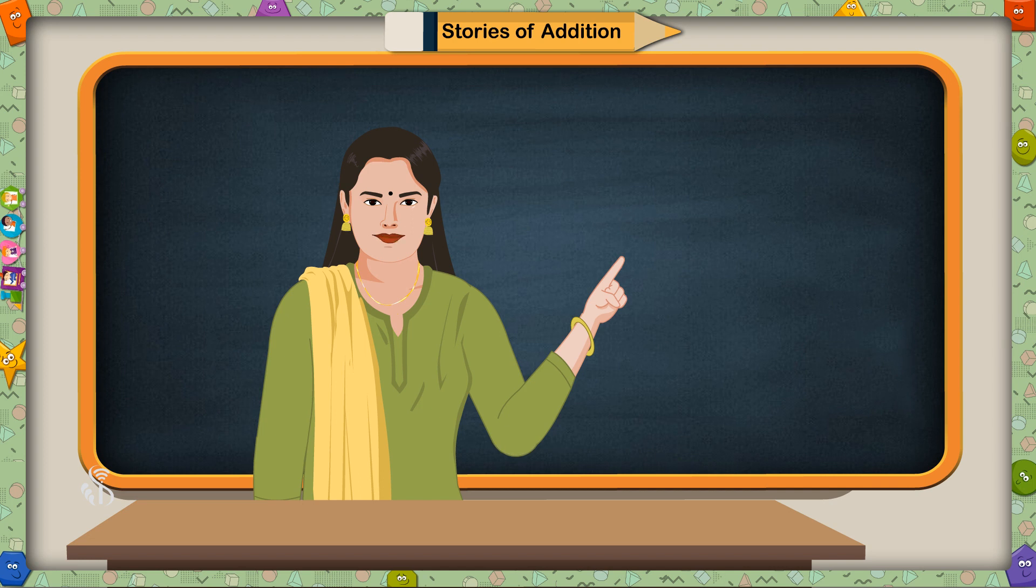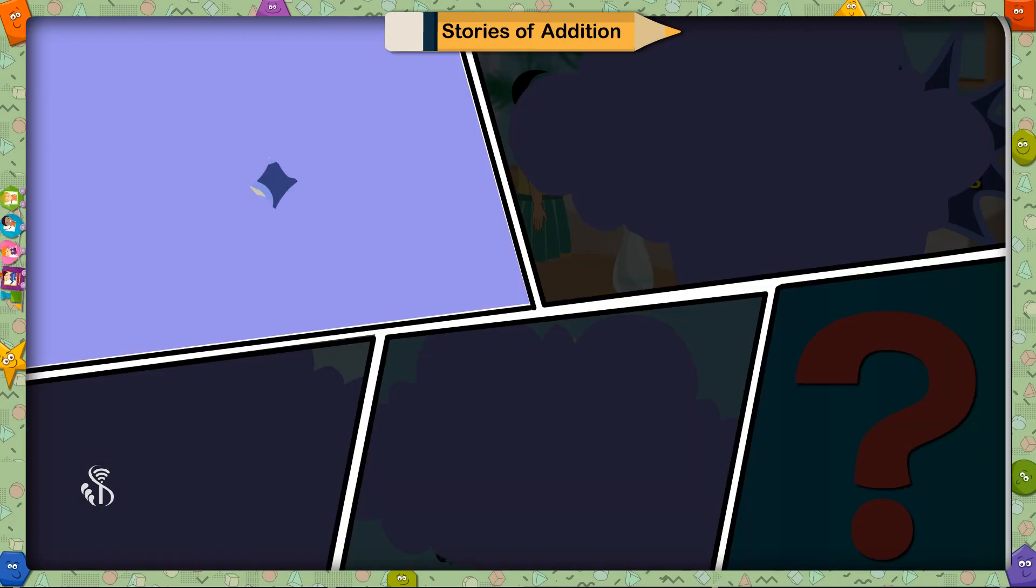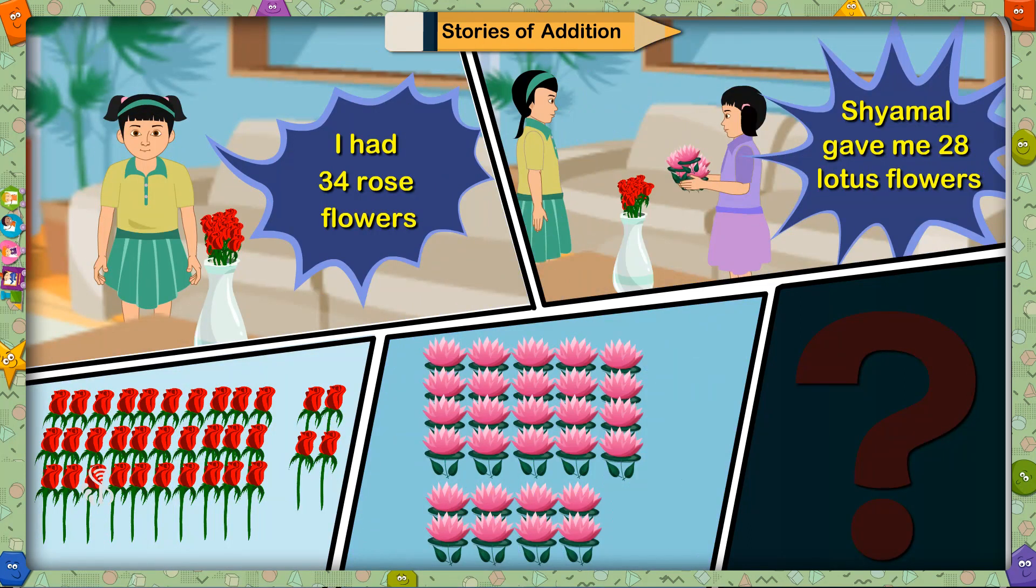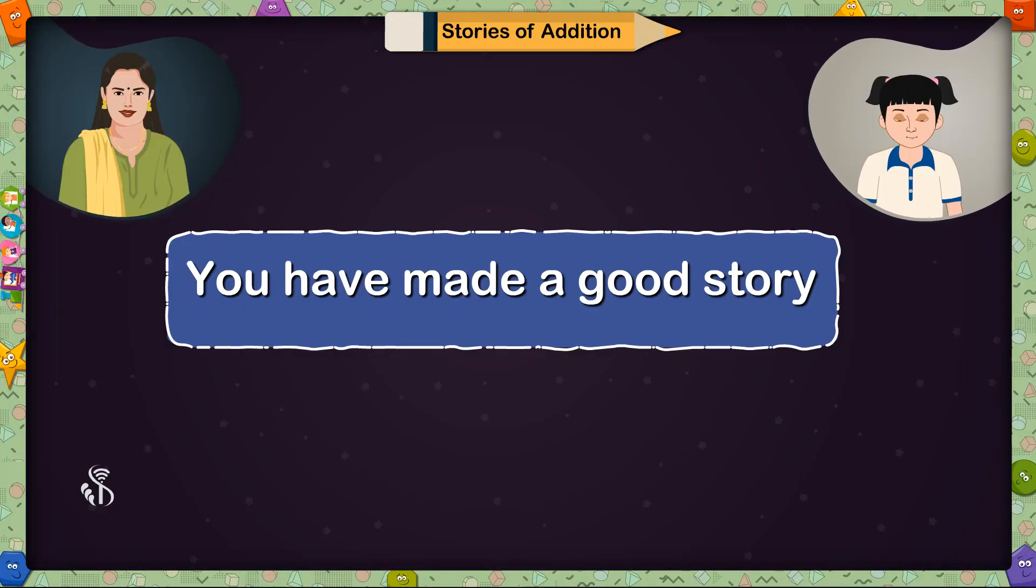Now I will give you some sums and you have to make stories for them. 34 plus 28. Who will make a story for this? Madam, I will. I have 34 rose flowers. Shyamal gave me 28 lotus flowers. How many flowers do I have all together? Very good. You have made a good story for this sum.